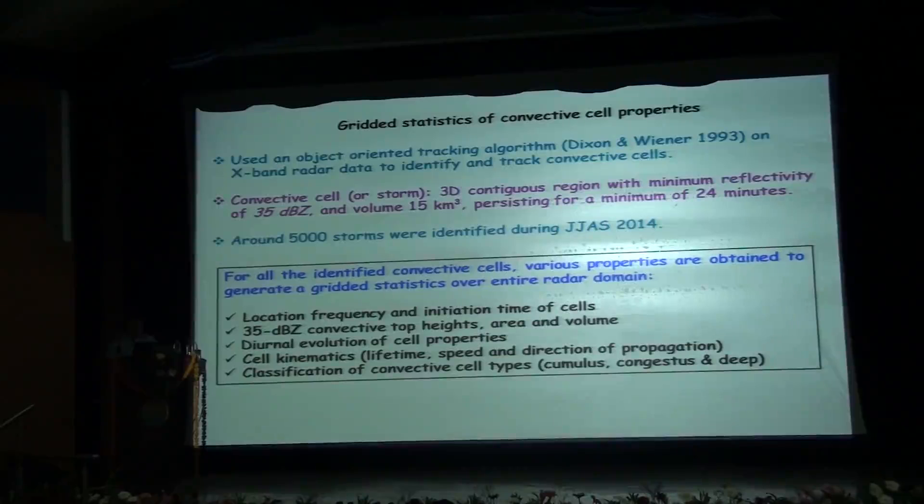With this criterion, around 5,000 storms were identified during monsoon 2014. For all the identified convective cells, various convective properties are obtained to generate a gridded statistics of convection over the entire radar domain. For example, the location frequency and initiation time of the cells, the 35 dBZ convective top heights, their area and volume, the diurnal evolution of the convective cell properties, cell kinematics, and classification of the convective cells.